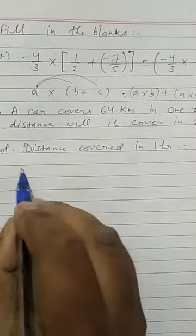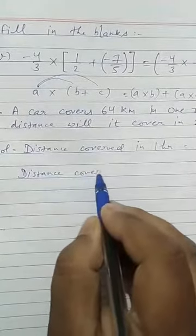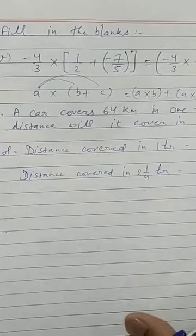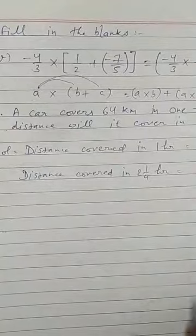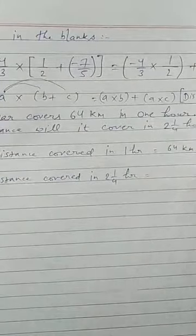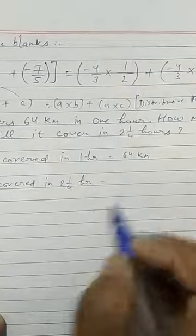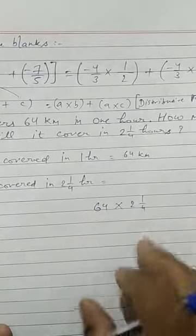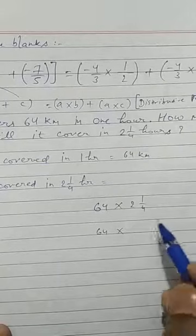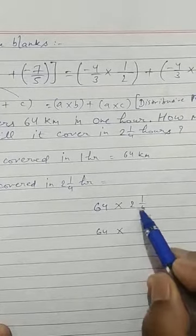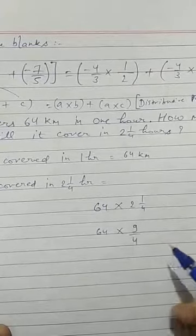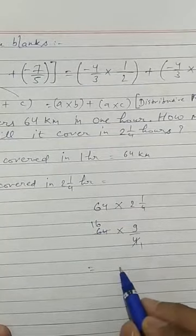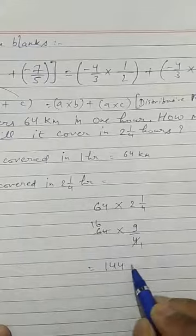Next. Distance covered in 2 and 1 upon 4 hour is equal to... This is the case of multiplication. When you have more time, you will cover more distance. 64 multiplied by 2 and 1 upon 4. This is an easy expression. 64 multiplied by... First we will change it into improper fraction. 4 times 2 is 8 plus 1 is 9. 4 times 1 is 4. 4 times 16 is 64. 9 times 16 is 144 km.